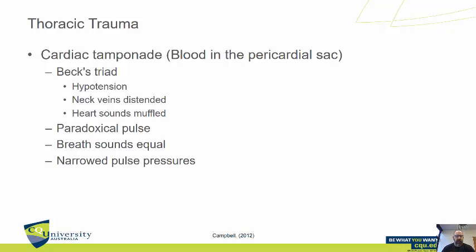The signs and symptoms we're going to see for cardiac tamponade — Beck's triad is the most commonly used distinguisher of this pathology. You're going to see hypotension, distended neck veins — pretty much for the same reason that you have distended neck veins in tension pneumothorax — because the heart's ability to receive venous blood is impeded, resulting in distention of those jugular veins.